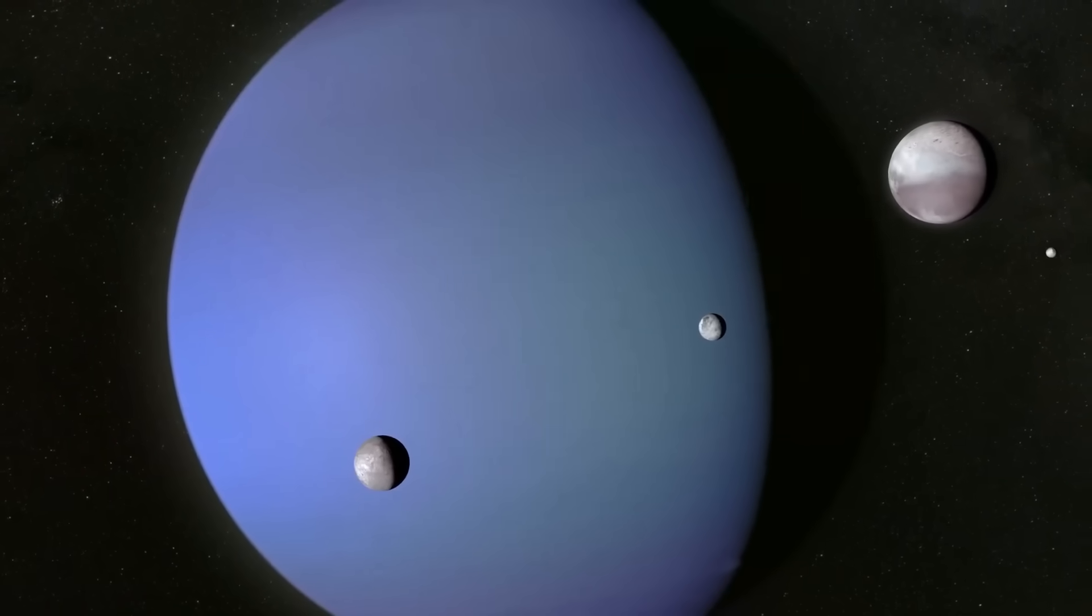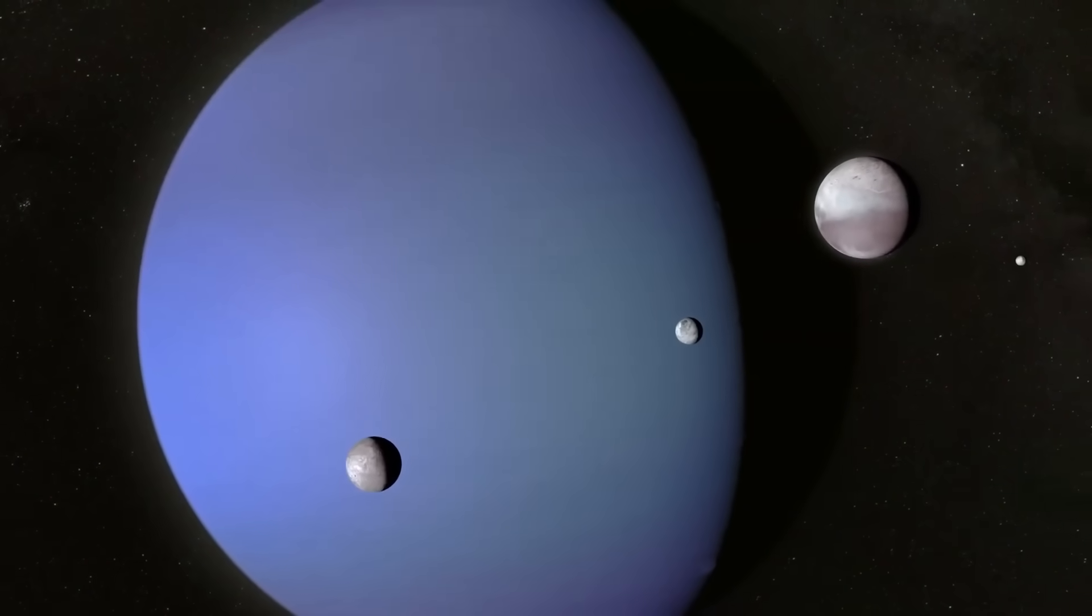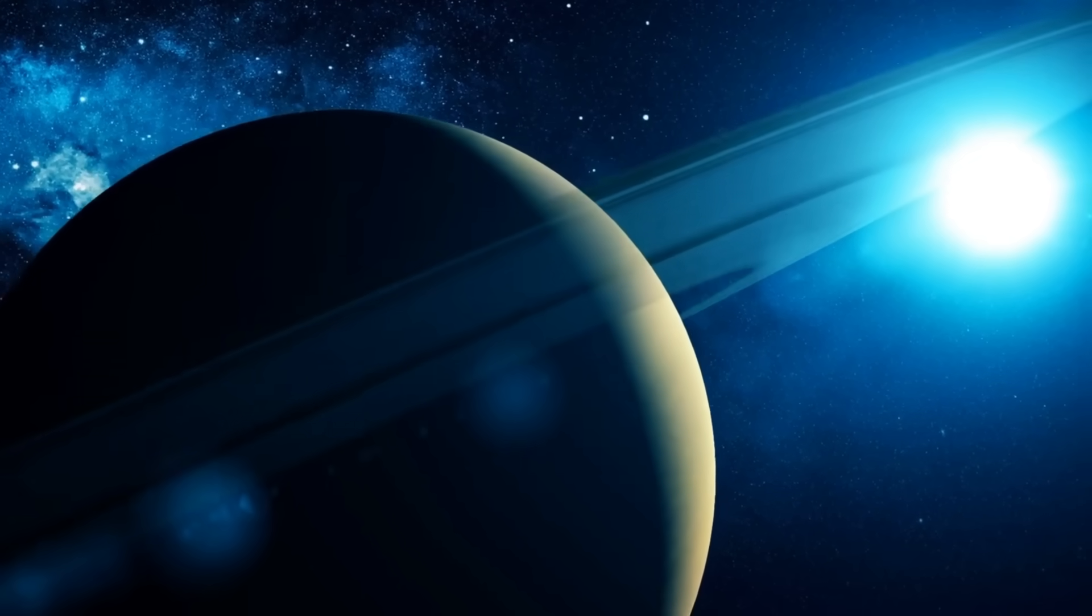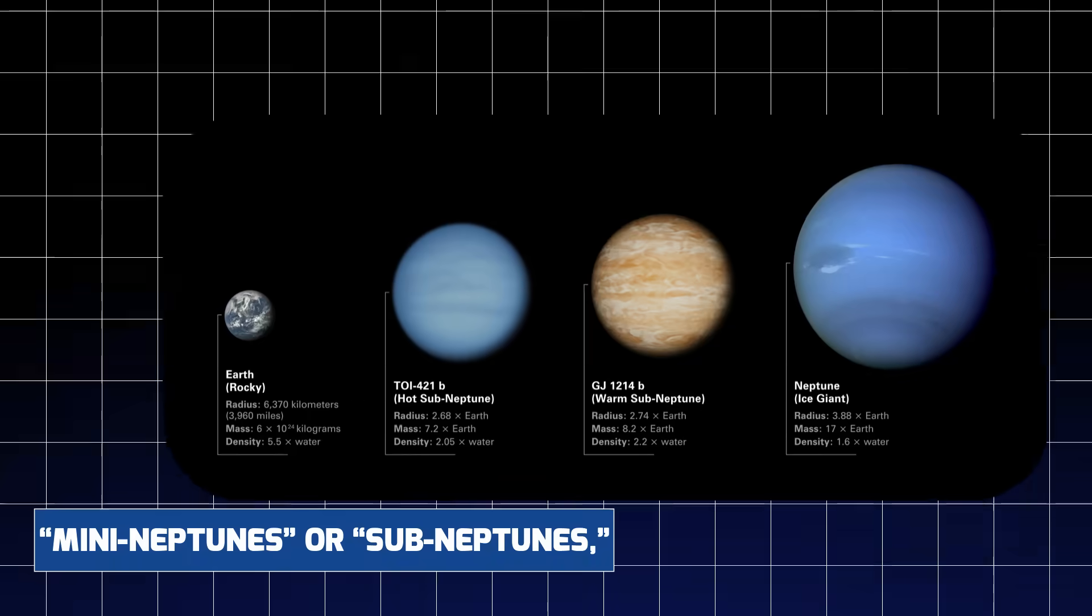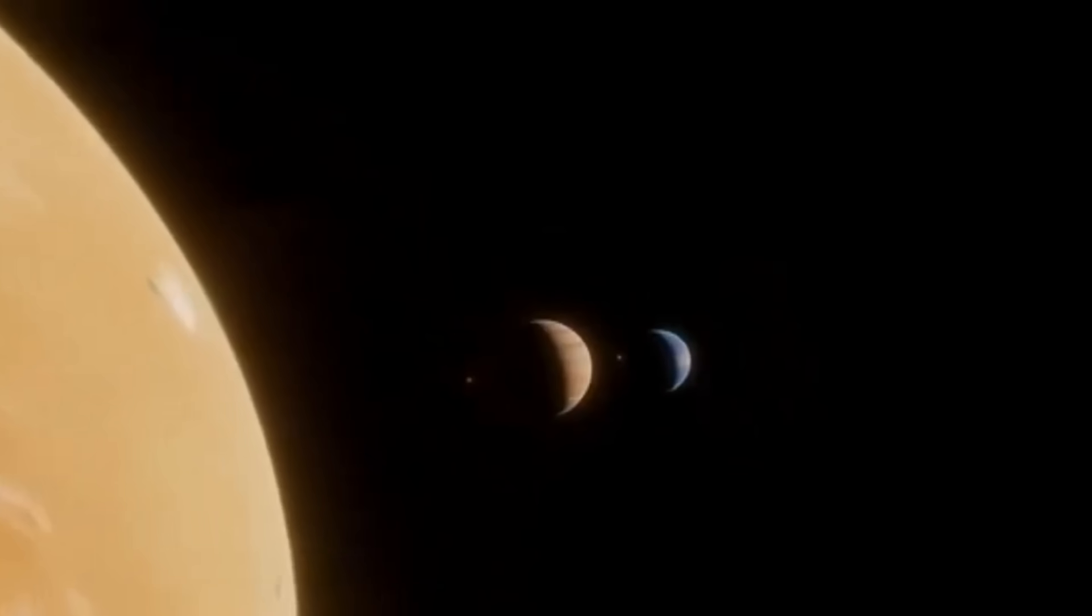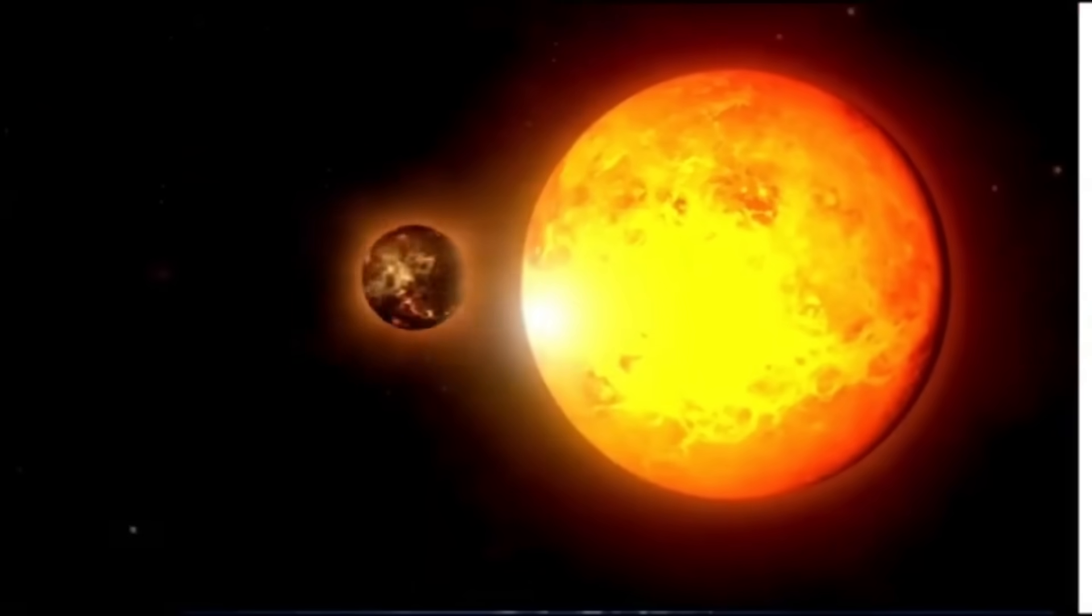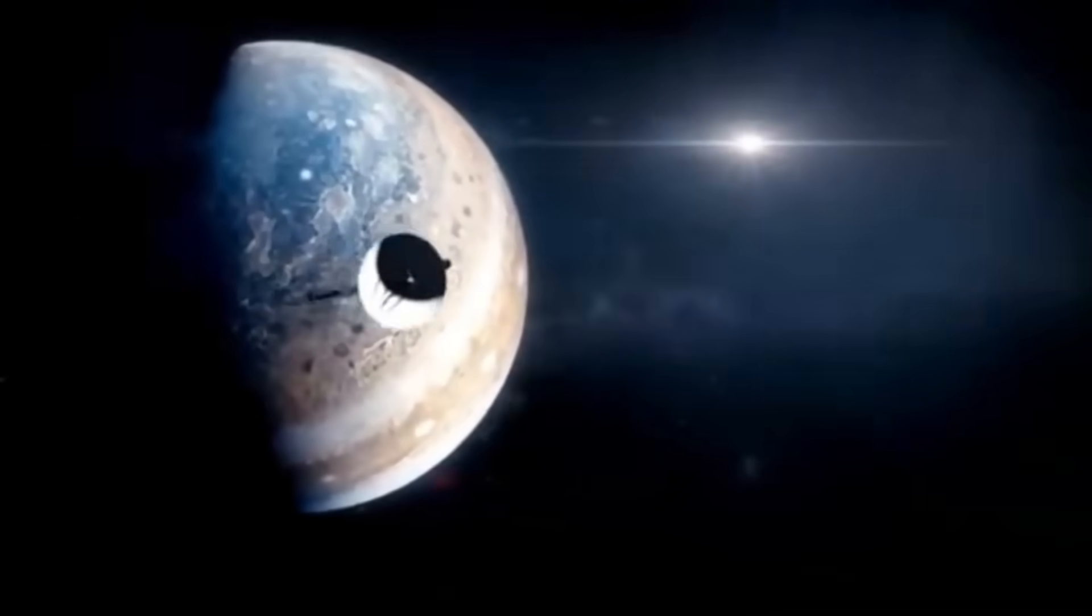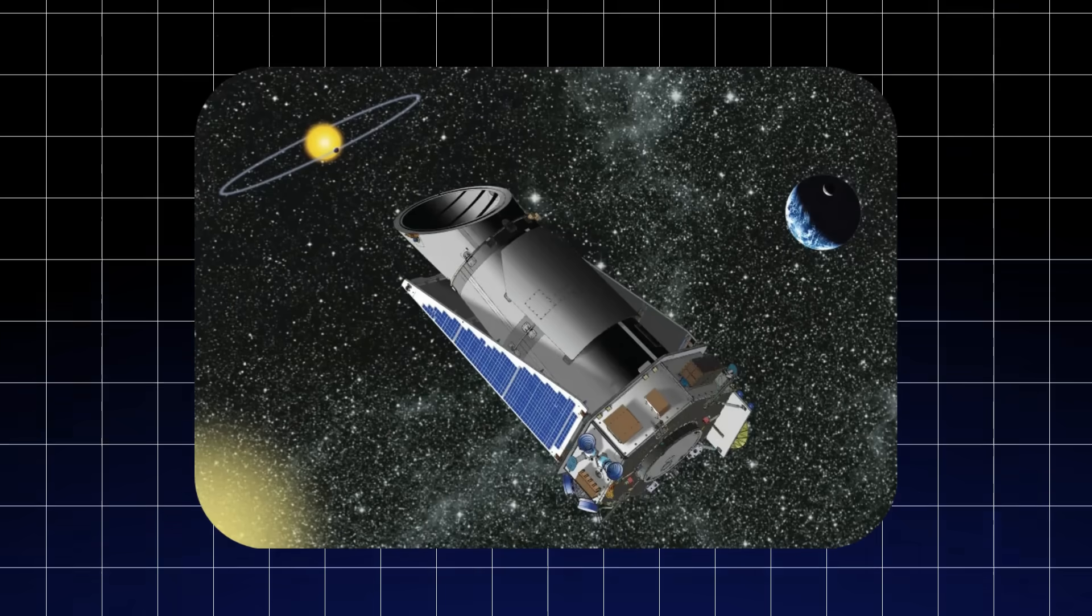The revelation even has implications for exoplanet research. Neptune-sized exoplanets, often labeled mini-Neptunes or sub-Neptunes, are among the most commonly detected types of planets outside our solar system. If Neptune is fundamentally different from what we assumed, then so too may be those thousands of similarly sized worlds now cataloged by missions like Kepler and TESS.